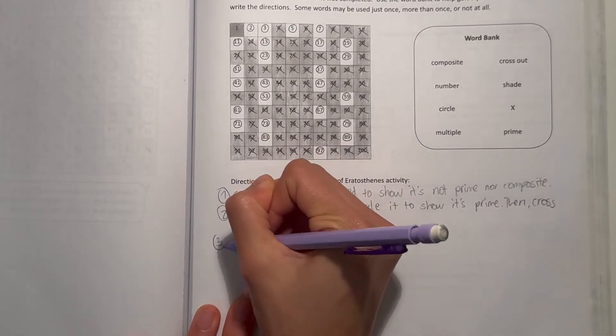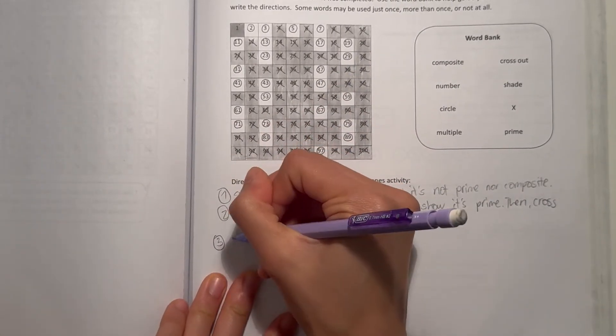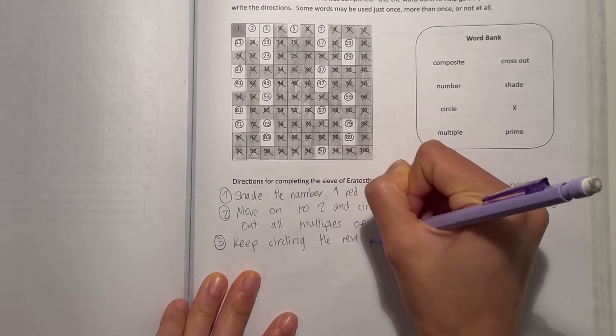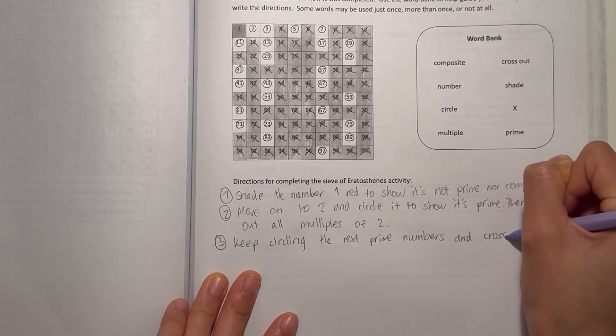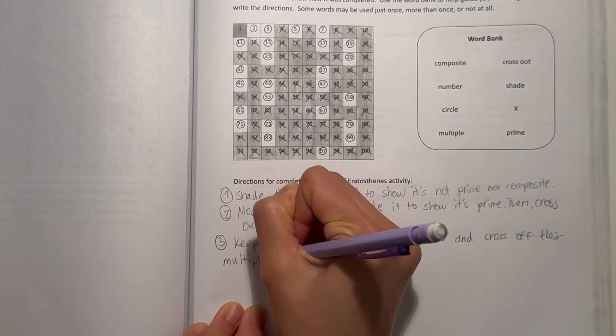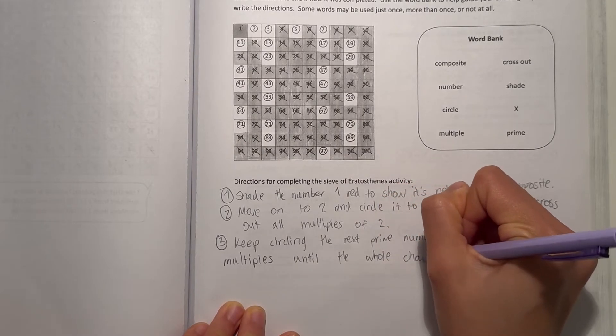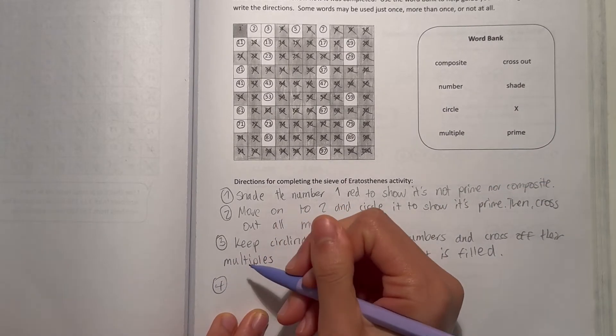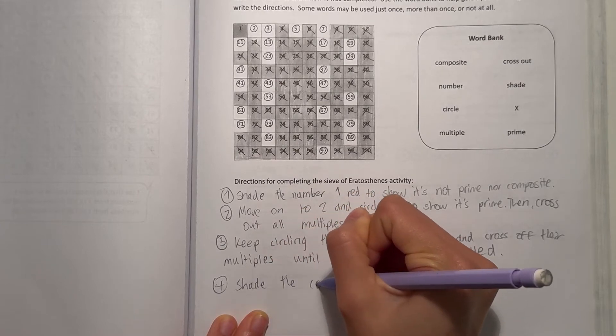Number three, well number three, really just keep on moving on. So number three, keep circling the next prime numbers and cross off their multiples. Pretty much until the whole chart is filled. And after that I guess you can shade in the composite numbers. Then shade the composite numbers.